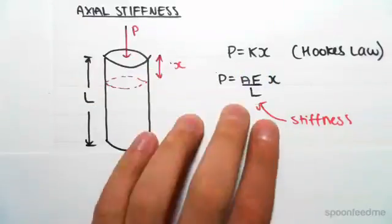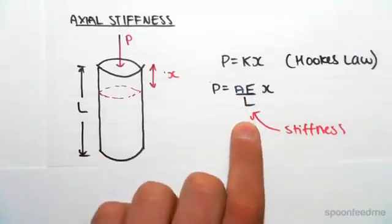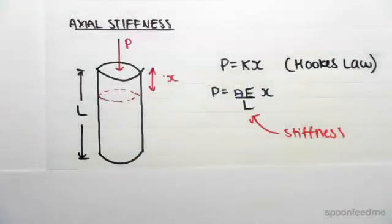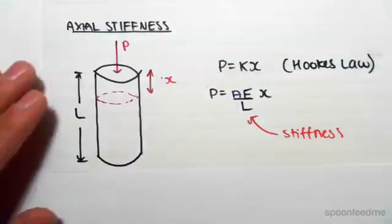Now for axial loading, the spring stiffness K is equal to AE on L, so we call this the axial stiffness. Now we're not using this in the moment distribution, I just wanted to show you this because I think this is something you guys might be familiar with.